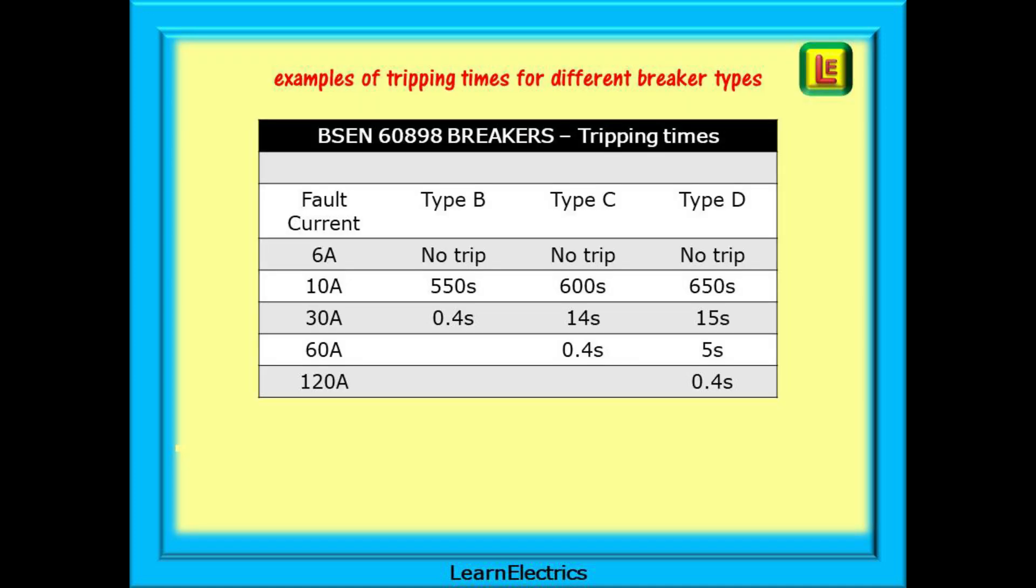This table just as an example gives a quick comparison of types B, C and D breakers. How quickly or slowly they react to different fault currents. A Type C device responds more slowly than a Type B breaker. And of the three a Type D is the slowest device to respond and this must be taken into consideration when thinking about changing a Type B for a C or a D type.